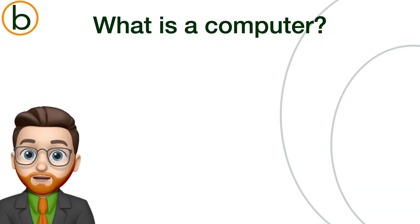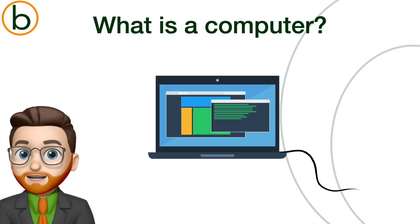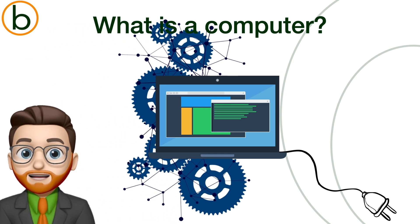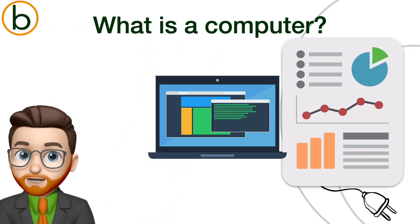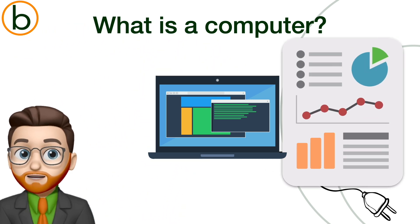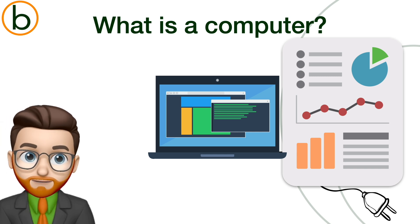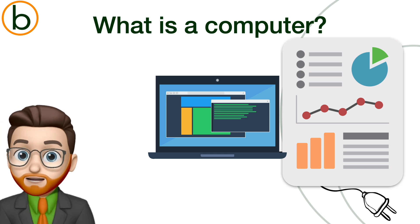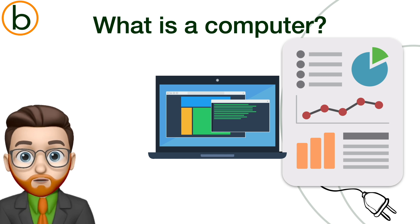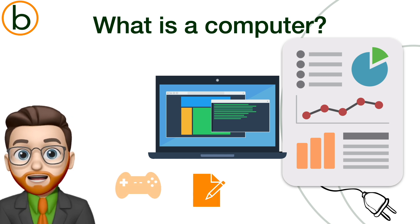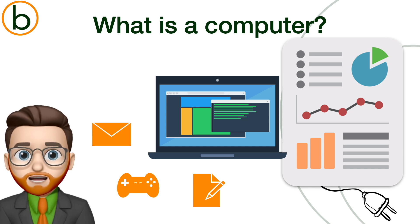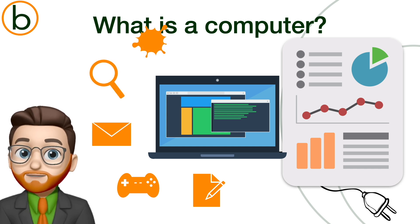Plain and simple, a computer is an electronic device that processes data into information. So it can store data, retrieve data, edit data and output information. You use a computer to create documents, play games, send emails, look stuff up online or do something creative.